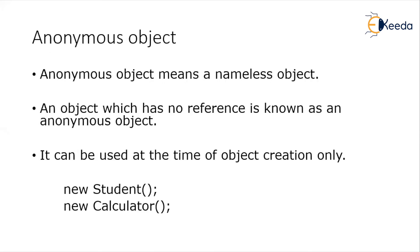The next concept is anonymous object. An anonymous object is basically an object which does not have a name. The syntax for creating an object is: class name, object name, equals new, and the call to the constructor. By declaring a reference, we are giving a name to that particular object. So when I say Student student1, student1 is the reference equal to the new object — the object of Student class has a reference, and the name of that reference is student1.